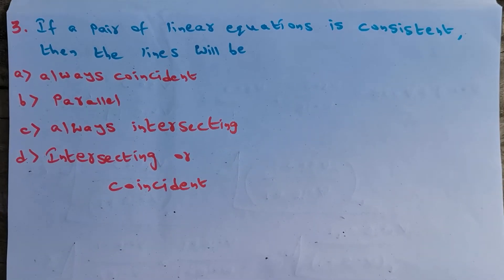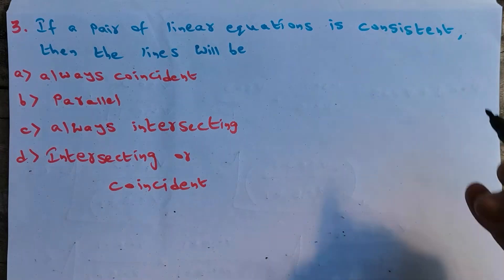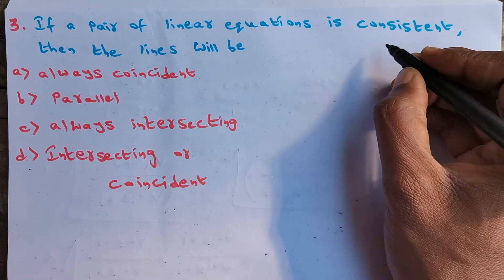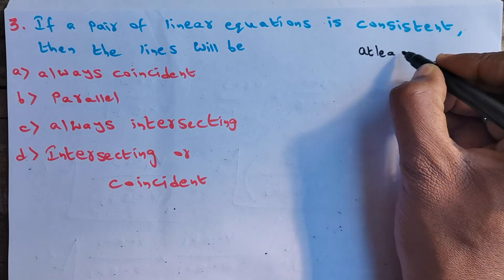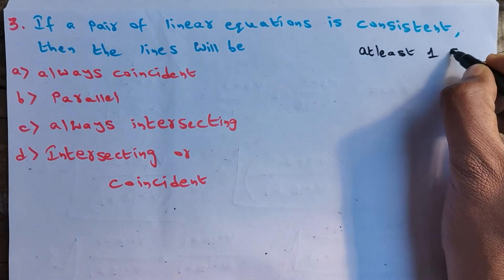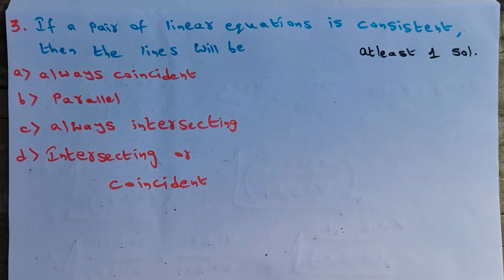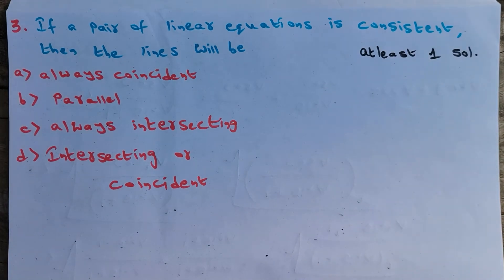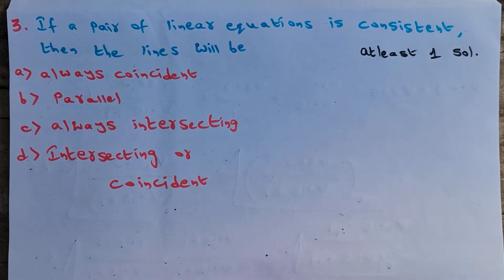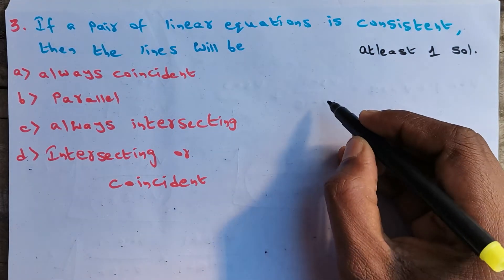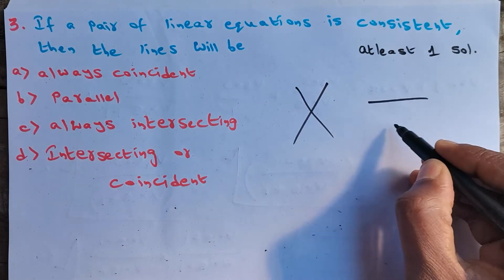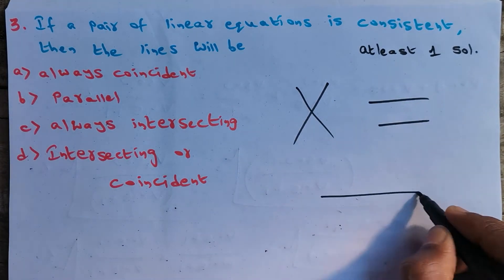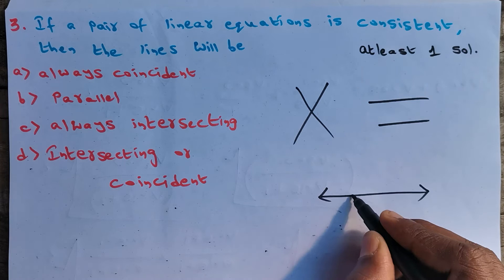Question 3: If a pair of linear equations is consistent, what does consistent mean? Those two equations should have at least one solution. If two given equations have at least one solution, they are considered consistent; otherwise inconsistent. We have three types of lines: intersecting, parallel, and coincident.